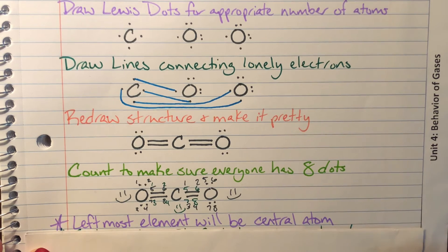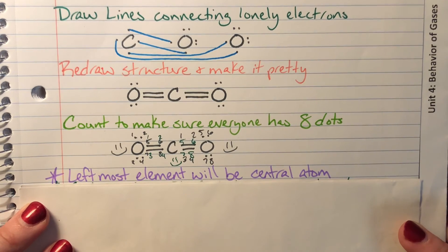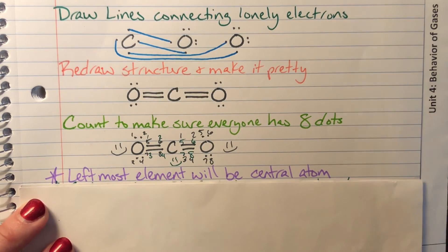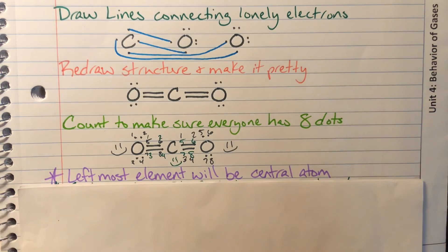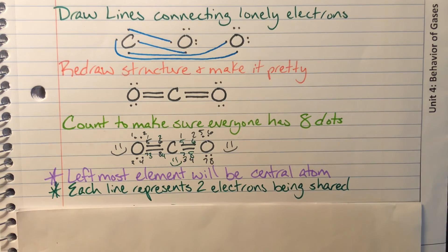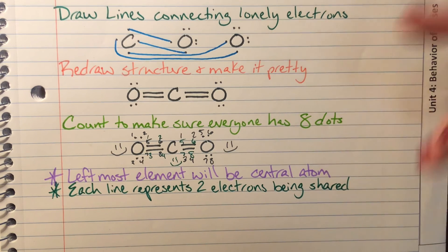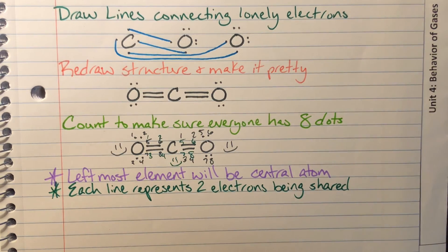A couple of special notes for covalent Lewis. My leftmost atom on the periodic table as well as in the actual formula most likely will be the central atom. I say most likely because hydrogen is an exception. It only has one valence electron. It can only form one bond and therefore it will not be my central atom. Each line within a covalent compound is going to represent two electrons being shared. So with those two things in mind and just remembering that everybody has to be able to have access to an octet except for hydrogen, you should be good to go for covalent Lewis dot structures.